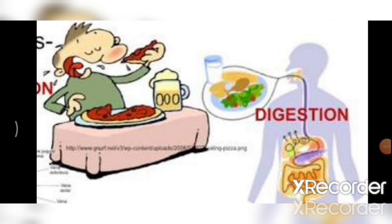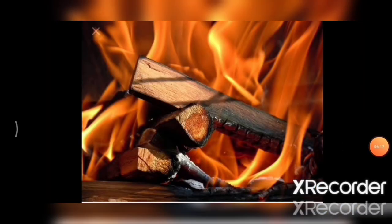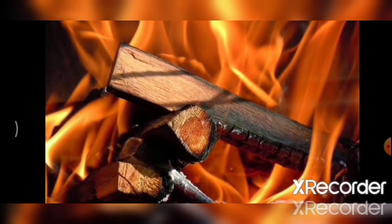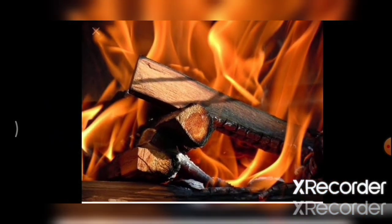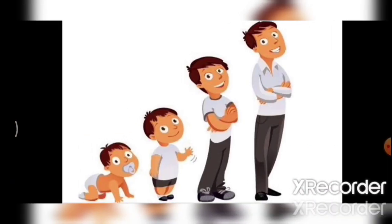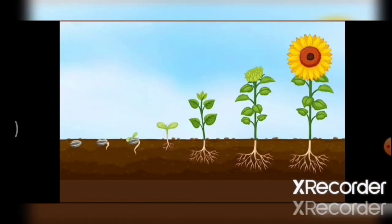Some other examples of irreversible changes are the digestion of your food. The burning of wood is also an irreversible change — once wood is burned, it changes into ash and we cannot get back the wood again. Also, our growth itself is an irreversible change, as well as the development from plant to tree.